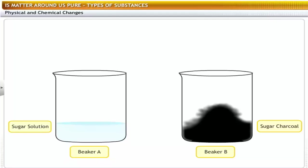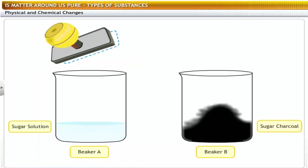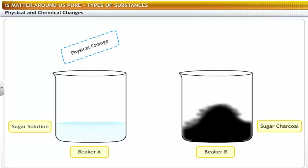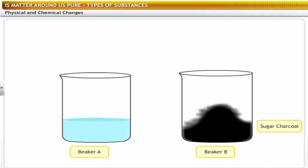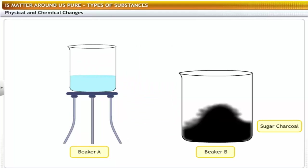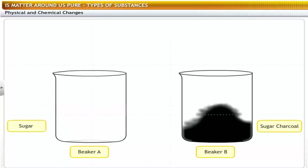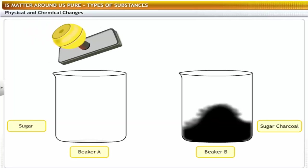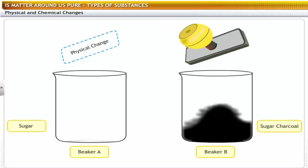From this, we can say that the change in beaker A is a physical change, whereas the change in beaker B is a chemical change. In beaker A, we can get back the sugar by the evaporation of water. On the other hand, in beaker B, we cannot get back the sugar from the carbon. From this observation, we can conclude that there are two types of changes: physical change and chemical change.